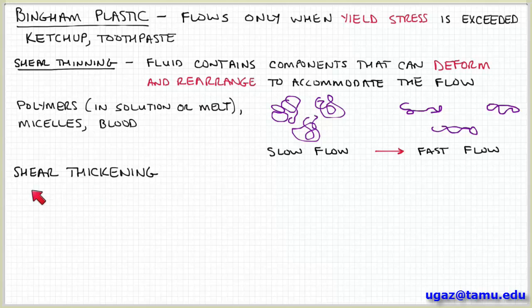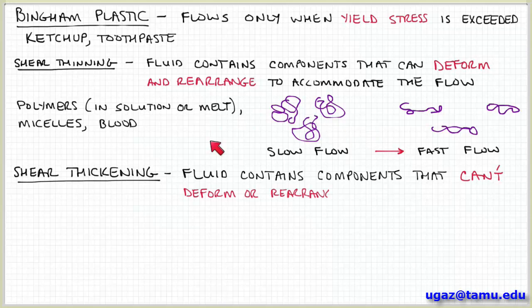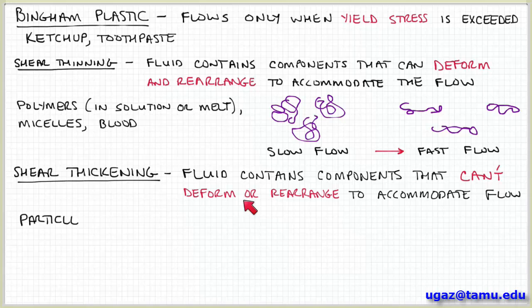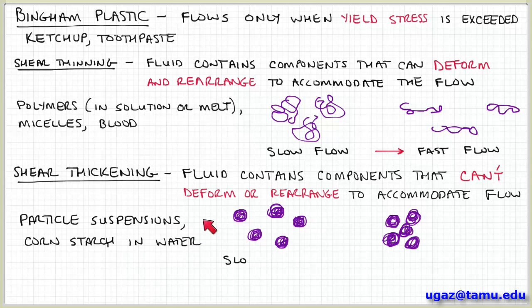Shear thickening behavior is maybe less common but just as interesting. So in this case, the fluid also contains components just like shear thinning fluids. But these components are different in the sense that they are not able to deform or rearrange to accommodate the flow. So as the flow or deformation rate increases, they sort of become stuck or jammed together. They are not able to rearrange quickly enough to accommodate the flow. And the result of that is you observe an increasing viscosity.